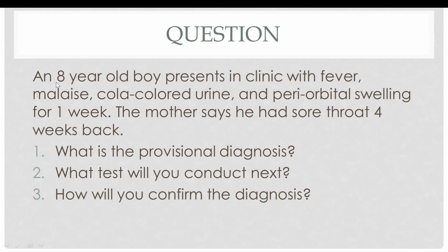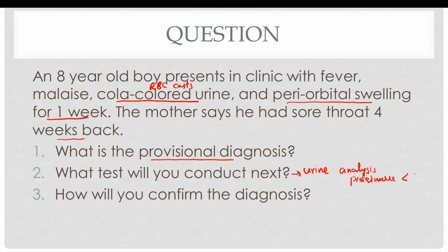Clinical case: An 8-year-old boy presents with a history of fever, malaise, cola-colored urine (due to RBC casts), and periorbital swelling for one week. His mother reports he had a sore throat four weeks back. All signs and symptoms point towards post-streptococcal glomerulonephritis, making it the provisional diagnosis. The next appropriate test is urine analysis, which reveals proteinuria less than 3.5 grams per day, and definitive diagnosis is established on histological study of the biopsy.